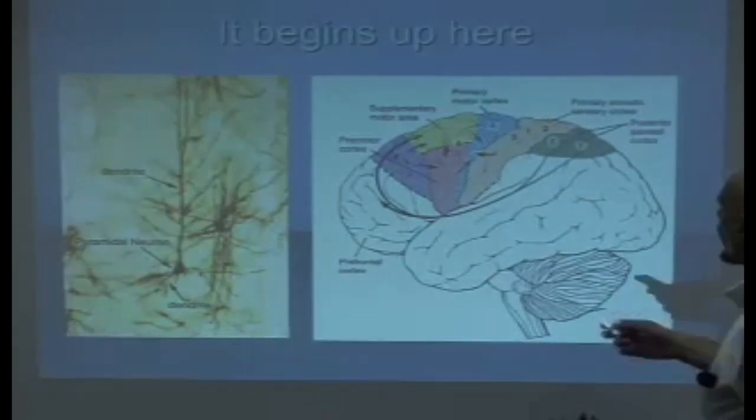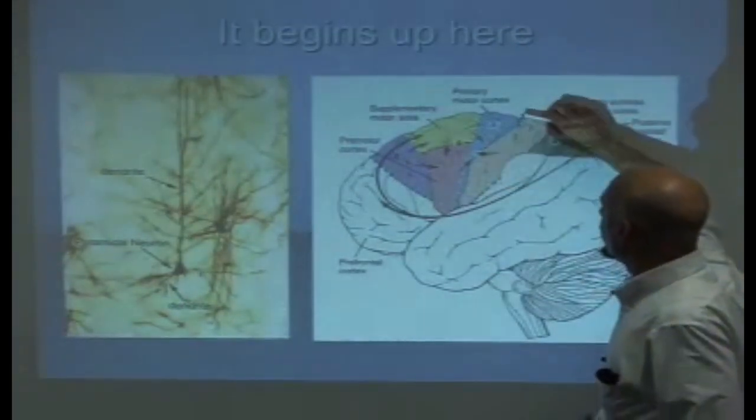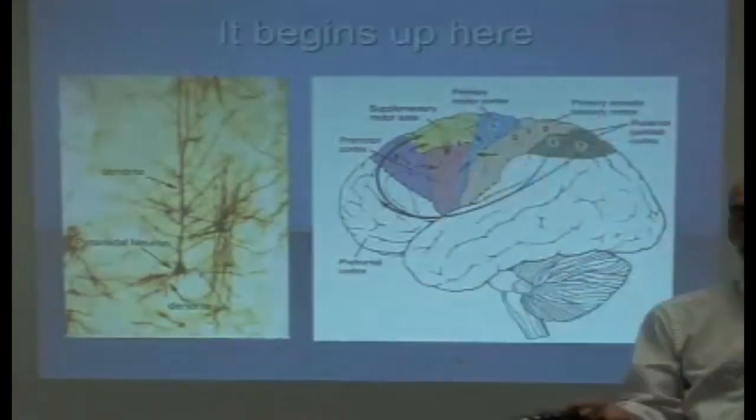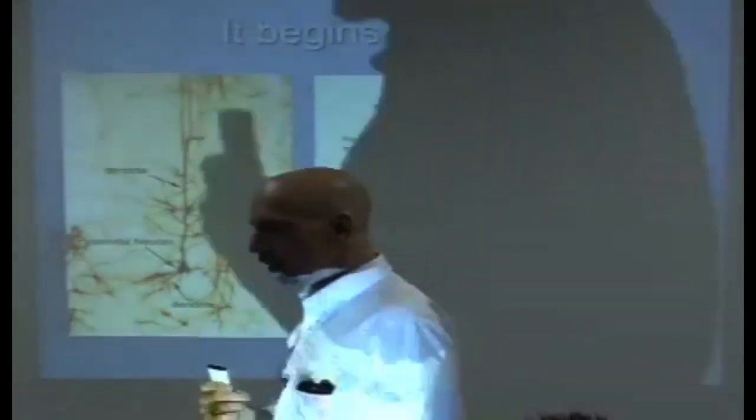And basically that's just fancy ways for saying area 4 is right next to the central sulcus. 6 is in front of that. S means suppressor, the suppressor band. That's important. That means when your brain wants to fire a muscle, it's got a check and balance system in there so when I fire my bicep, it doesn't just go like this. It comes up nice and slowly.